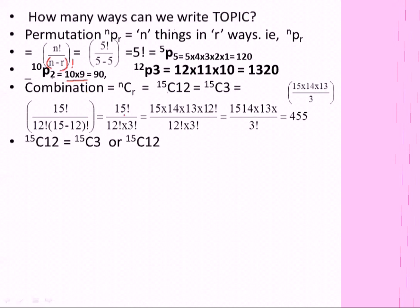We will see that factorial 15 divided by factorial 12 into 3, okay factorial 3. Then we will see that factorial 15 divided by factorial 12 into 3. So we will see that factorial 15 divided by factorial 14 into 13 into 12. And that factorial 12 is equal to 12. Then we will see that factorial 12 is equal to 15 and 13.